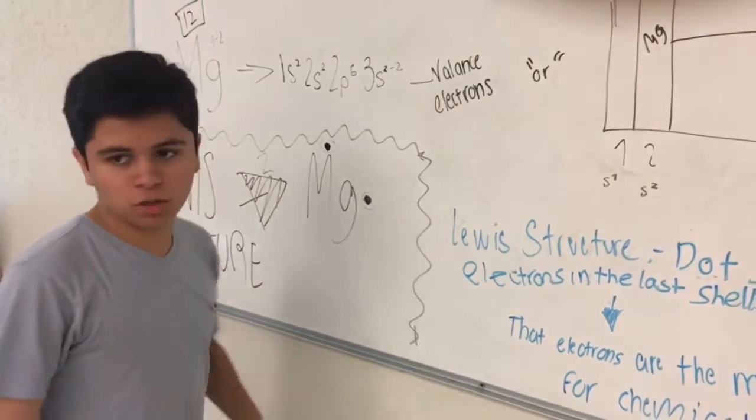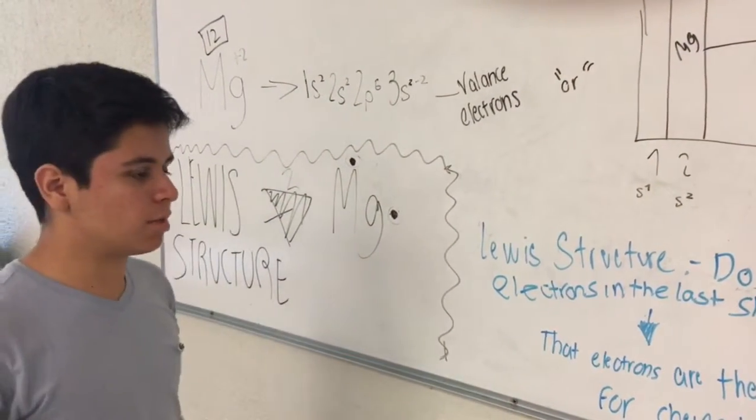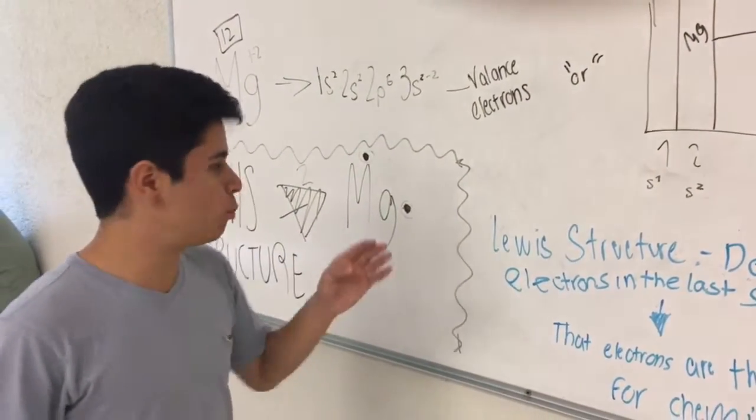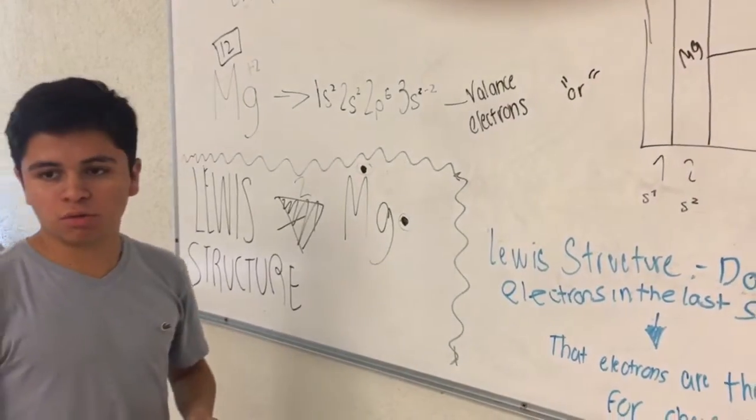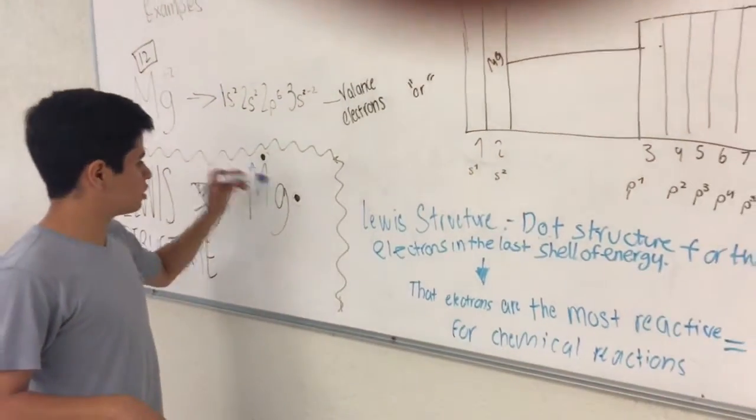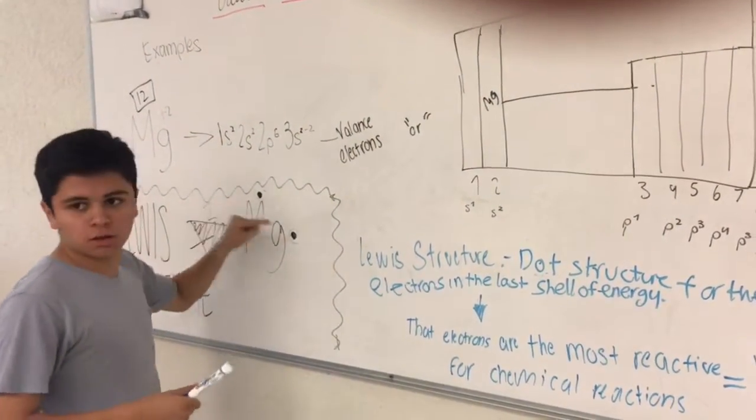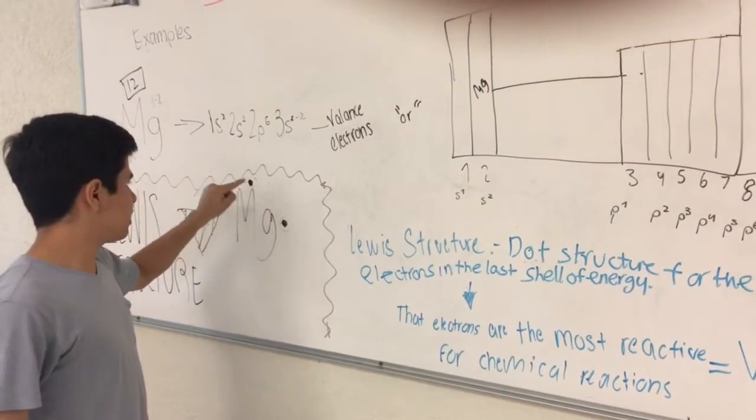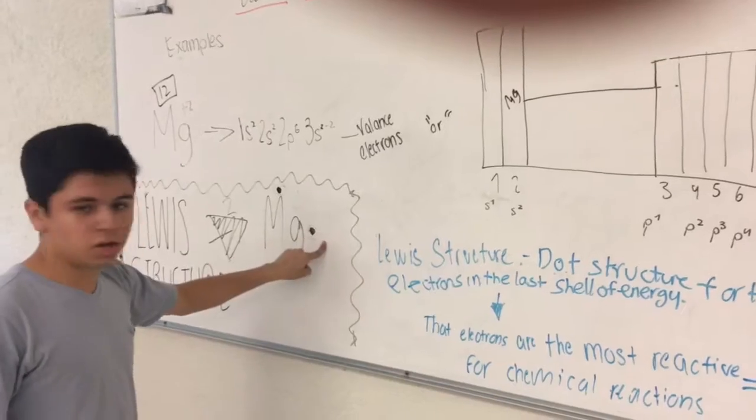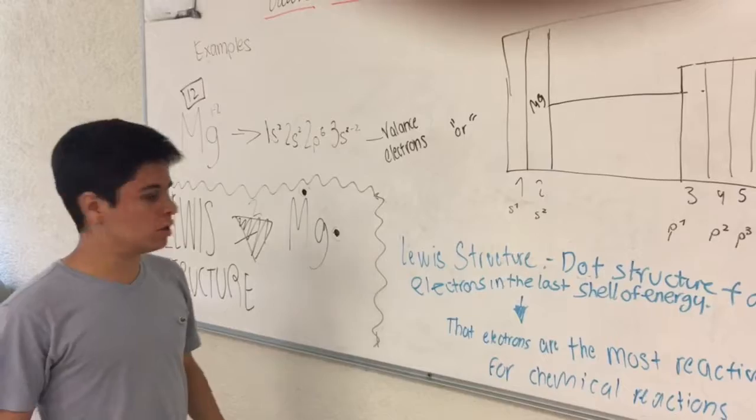We need to find the number of valence electrons. The number of electrons corresponds to the group. Magnesium is in group number 2, so it has 2 electrons. The electrons are represented as dots, as closed dots. You need to write one dot in clockwise direction, so by writing a dot in here and a dot in here, and like that you write a Lewis Structure.